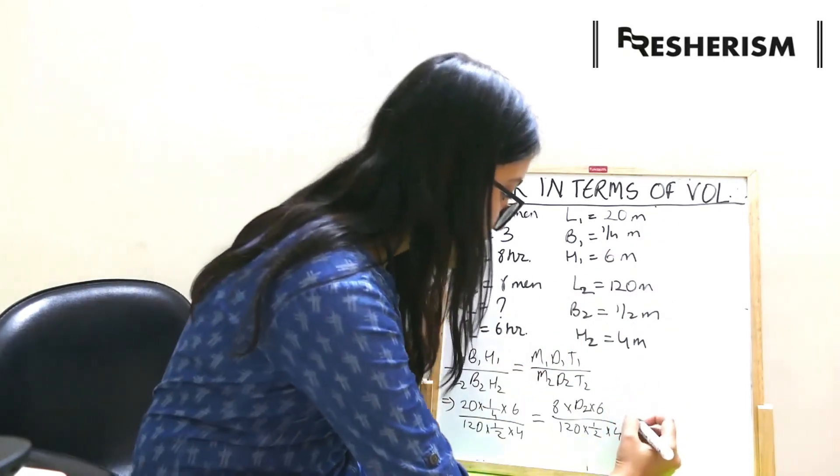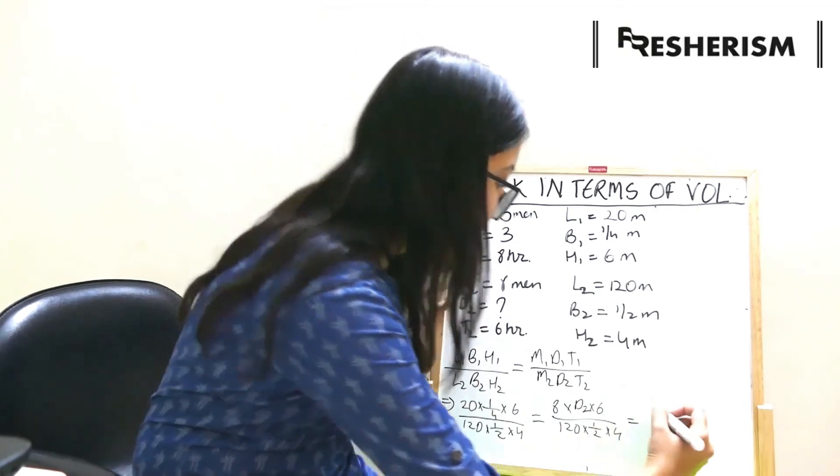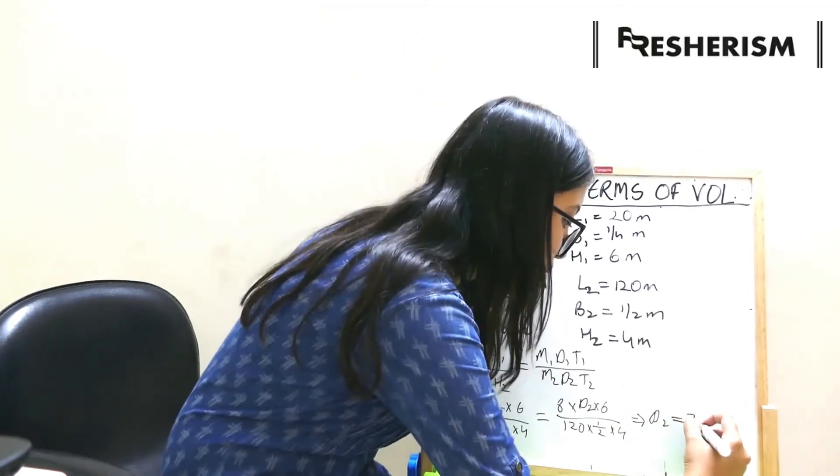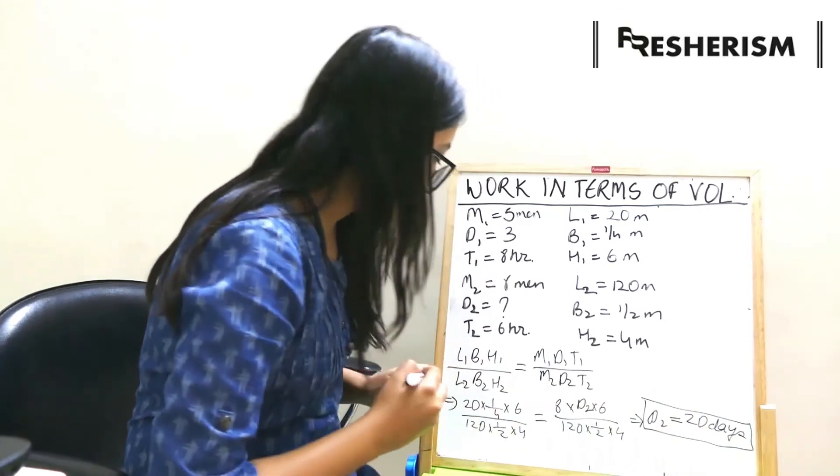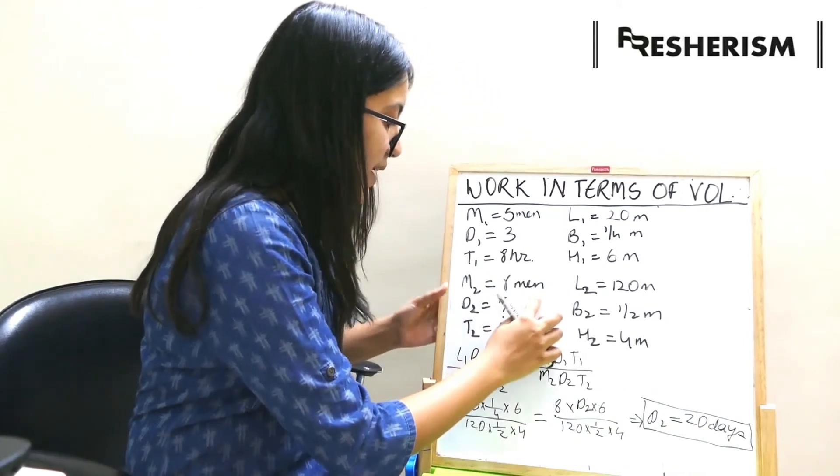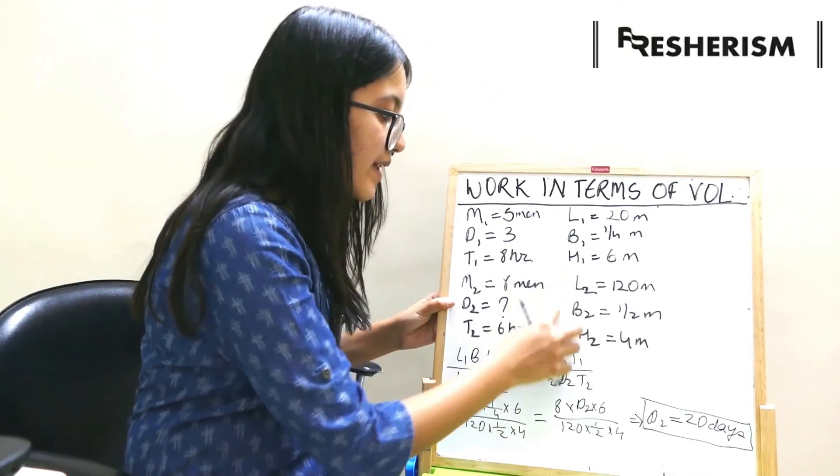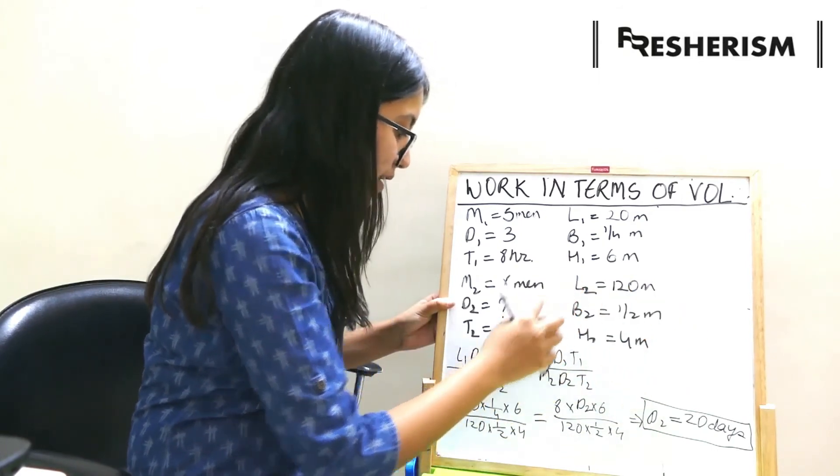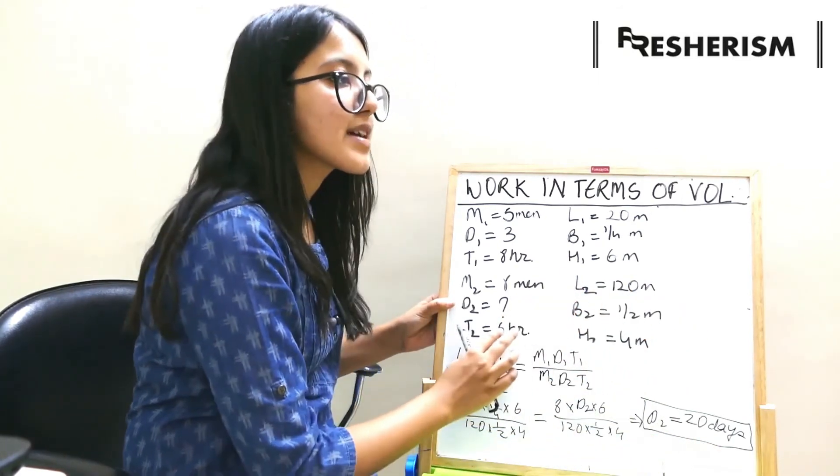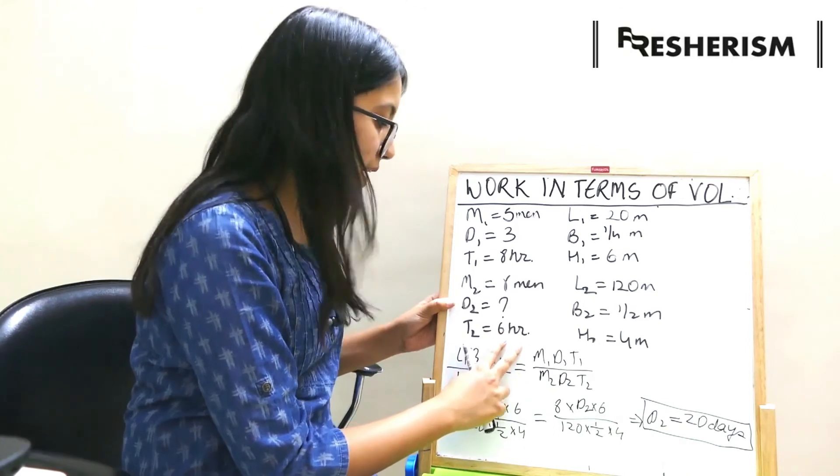Coming back here, after solving this, we get d2 as 20 days. Therefore, 8 men will complete building this wall in 20 days after working 6 hours per day.